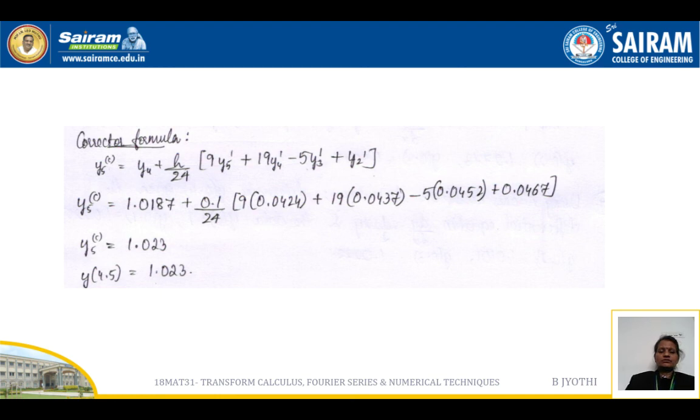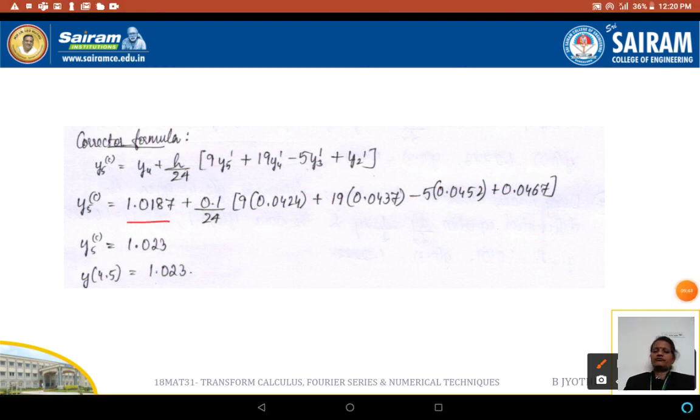On substitution of these values: y₄, h = 0.1, y₅' = 0.0424, y₄' = 0.437, y₃' = 0.0452, and 0.0467. Now on simplification we are getting 1.023. So y(4.5) = 1.023.